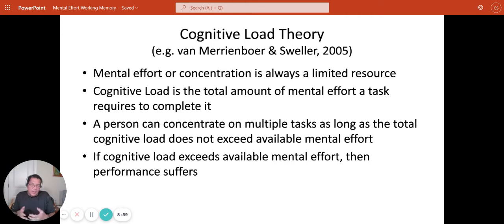Let's talk about each of these constraints in more detail and how we deal with them. We'll start with mental effort. In order to understand mental effort, you have to understand cognitive load theory, which was developed by Sweller and Associates. They start with the idea that mental effort or concentration is always a limited resource, which we've talked about. Then they talk about cognitive load, which is the total amount of mental effort a task requires to complete it. Some tasks have fairly low cognitive load, like memorizing a new vocabulary term. Others have a very high cognitive load, like reading a Shakespearean play for the first time. You can distribute your mental effort or concentration across multiple tasks as long as the total cognitive load of all those tasks doesn't exceed your available mental effort. If the cognitive load does exceed mental effort, then your performance is going to suffer. Your performance is going to really fall apart in that case. You're going to be overwhelmed.